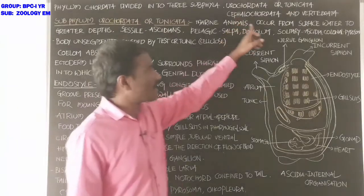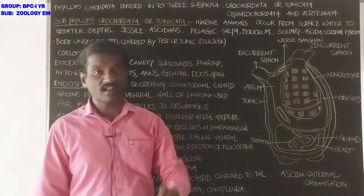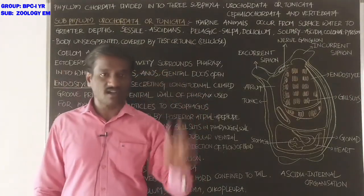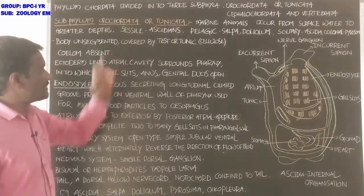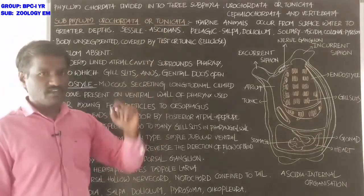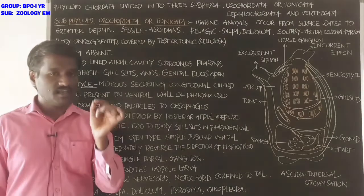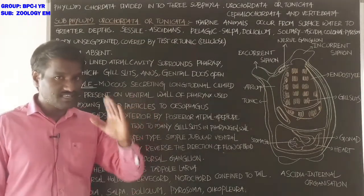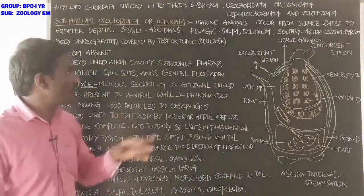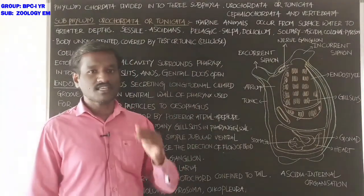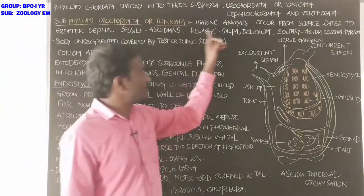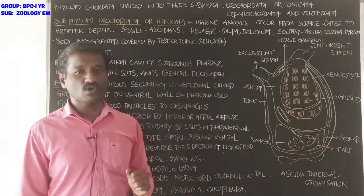These animals occur from surface water to greater depths. Next, sessile means immovable — Ascidians are sessile animals that attach to the substratum and are immovable. Pelagic animals, like Salpa and Doliolum, live on the upper surface of water.